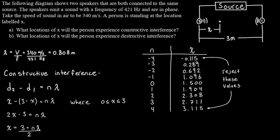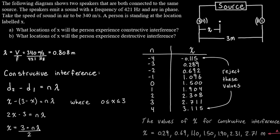Calculating all values, we find that n between negative 3 and positive 3 gives x values between 0 and 3. n equals negative 4 gives x equals negative 0.115, which we reject, and n equals 4 gives x equals 3.115, which we also reject. So the final x values for constructive interference are: 0.29, 0.69, 1.10, 1.50, 1.90, 2.31, and 2.71 meters. Those are the locations where you'll hear a louder sound because the two waves are perfectly in sync and adding together.